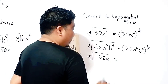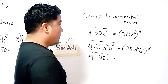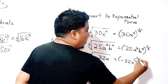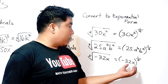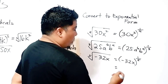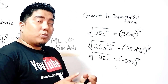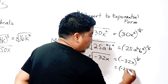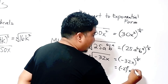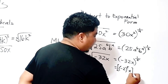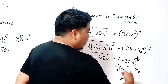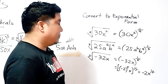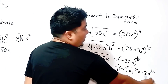And finally, we have the fifth root of negative 32x. What we can do is write negative 32x to the power of 1 fifth. Now, 32 can still be reduced — 32 is 2 to the power of 5 — so we can write this as negative 2 to the power of 5, times x, all to the power of 1 fifth. Simplifying this gives you negative 2x to the power of 1 fifth. So your answer could be either form.